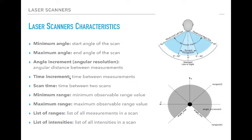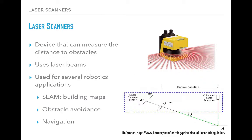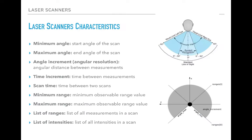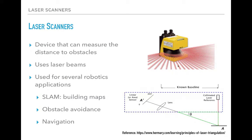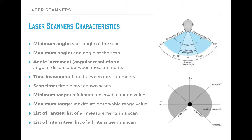The laser scanner is also characterized by the time increment, which is the time between individual measurements — we send one measurement and then another, and the time between two measurements is called the time increment. This is different from the scan time, which is the time between two full scans. One scan means sending all the different beams; after getting all the measurements, we send another scan.